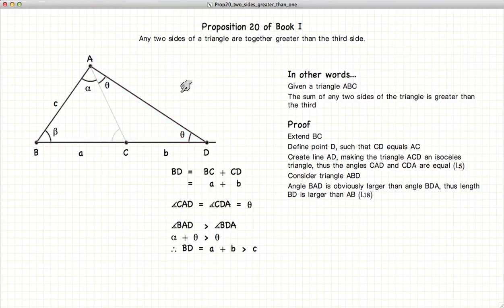Now if we look at the larger triangle, alpha plus theta is obviously larger than theta. And as we know from Proposition 18, the longer side of a triangle is opposite the larger angle. So alpha plus theta being the larger angle, a plus b will be the larger side, compared to the side that is opposite the smaller angle.